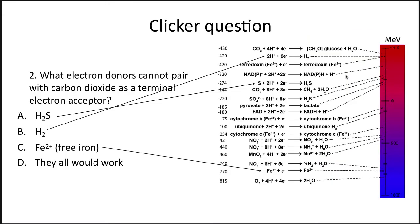So what electron donors cannot pair with carbon dioxide as a terminal electron acceptor? If you look in the electron tower, you'll see that iron is way below carbon dioxide, where carbon dioxide would be reduced to methane, so there's no way you can use it. Hydrogen and hydrogen sulfide might be able to be used, though H2S is so close in potential it likely doesn't give enough energy — there is an electron potential drop, but it might not be large enough.